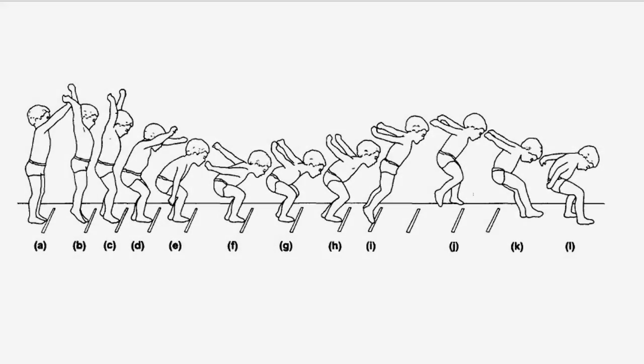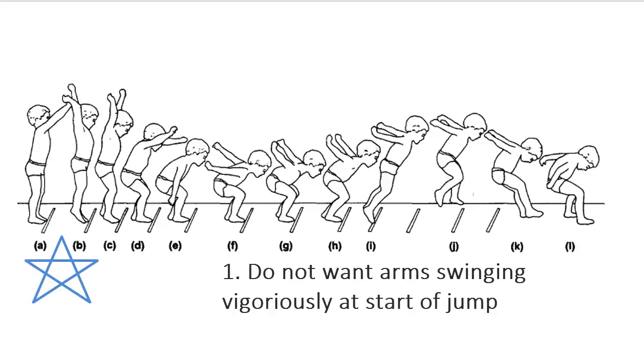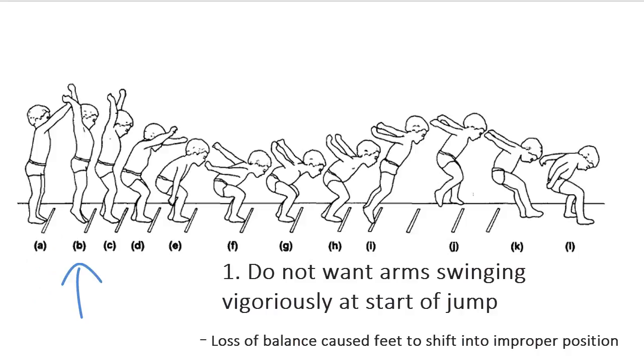The performance might have also been improved if the performer had not swung his arms so vigorously forward and upward at the outset. This appears to have led to an unweighting of the feet at position B and a momentary loss of balance that caused shifting of the feet at position C.